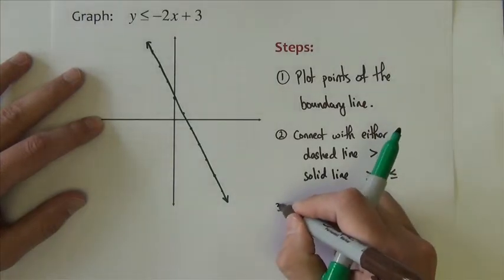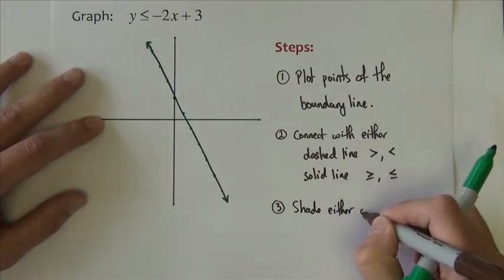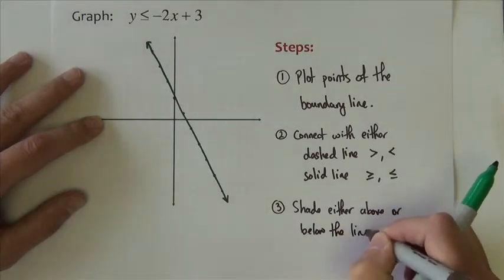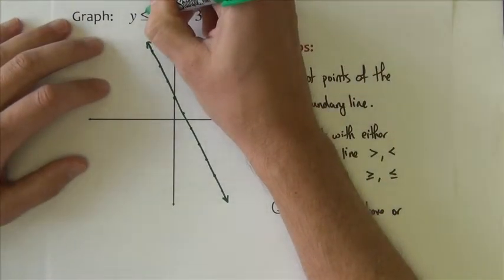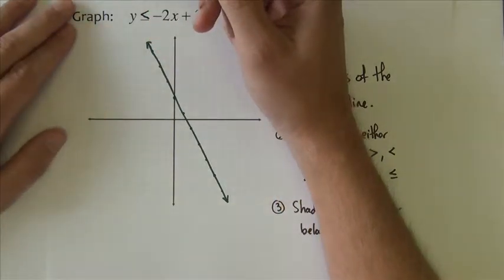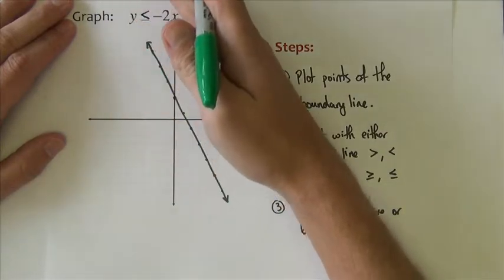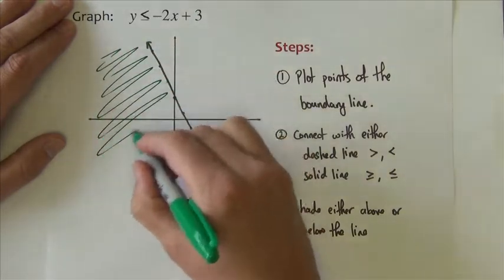The last thing we're going to do is shade either above or below the line. We're going to shade one side or other of this line. The inequality tells me which side to shade. This is a less than inequality, so I want to shade the side of this line that is less than the line. Less than would imply beneath the line. I can clearly see I've got an above side and a below side of this line. I want to shade everywhere below this line.